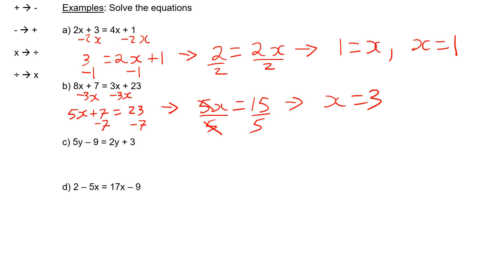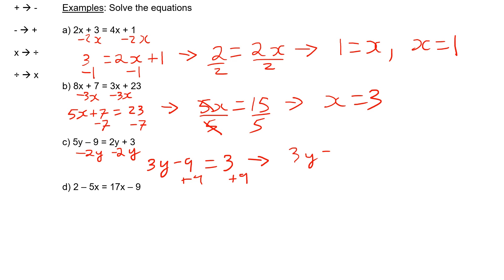In C, I'm firstly going to subtract 2y from both sides because there are more y's on the side with 5y. This will leave me with 3y minus 9 is equal to 3. I'm then going to add 9 to both sides, which will leave me with 3y is equal to 12. Finally, I divide both sides by 3, leaving me with y equals 4.